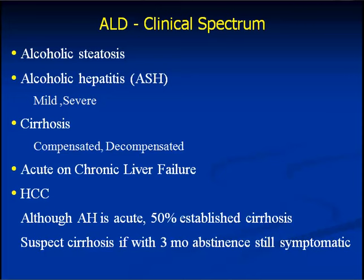A newer term is acute on chronic liver failure, which has been recognized for the last 4-5 years. It is defined as any person who has been drinking alcohol, develops jaundice and develops ascites within 4 weeks. Liver transplantation is needed in these cases if there is no reversibility with therapy. Patients of alcoholic liver disease are also more prone to develop HCC. Although alcoholic hepatitis is acute, when you do a biopsy in these patients, 50% of them have established cirrhosis. One should always suspect cirrhosis if even after abstinence the patient is still symptomatic.